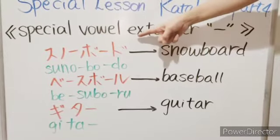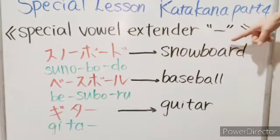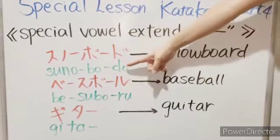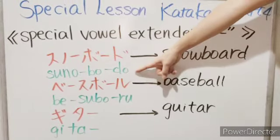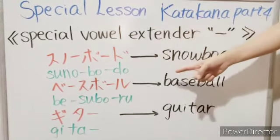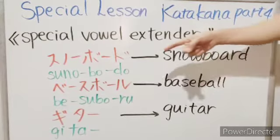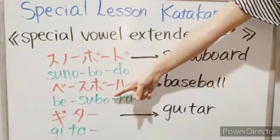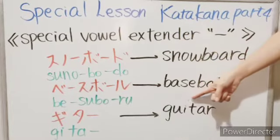Snowboard, baseball, gita (guitar) — these are examples using the vowel extender character.